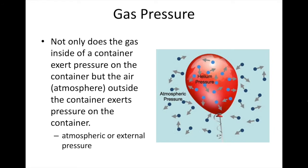Not only does a gas inside a container exert pressure on that container, but the air in the atmosphere also exerts a pressure — a force — on the container. So the atmosphere represents an external pressure. In a balloon, for example, the helium particles exert an internal pressure, while the atmospheric air collides from the outside, exerting an external pressure. We often have to consider both the internal and external pressure when discussing a gas.